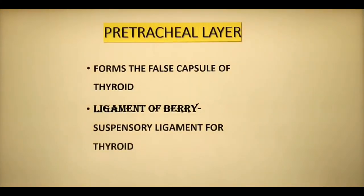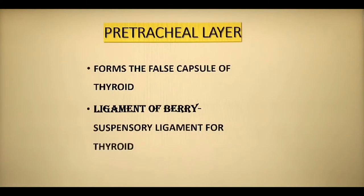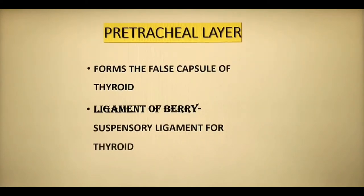There are a few other features of the pretracheal layer. On either side of the thyroid gland, it forms a suspensory ligament for the gland, known as the ligament of Berry. This ligament is attached to the cricoid cartilage and also to the thyroid cartilage, and its function is to support the thyroid gland and prevent it from sinking into the mediastinum. This fascia also provides a slippery surface for the free movement of the trachea during swallowing.